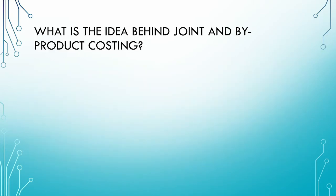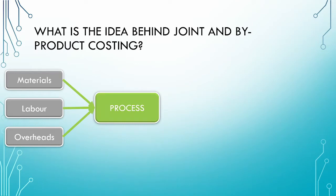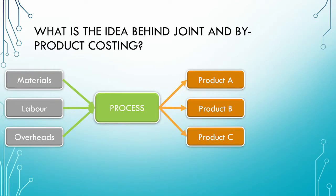Let us begin by revising the idea behind joint and byproducts. As with any other manufacturing process, we take our raw materials, labor, and overheads and subject them to the manufacturing process to get a product out. However, unlike a single product process, we could get two, three, or even more products simultaneously from this process.